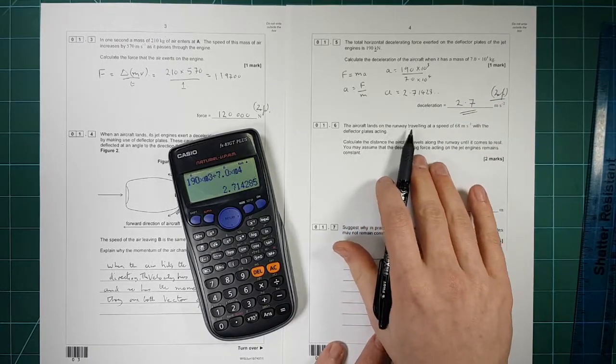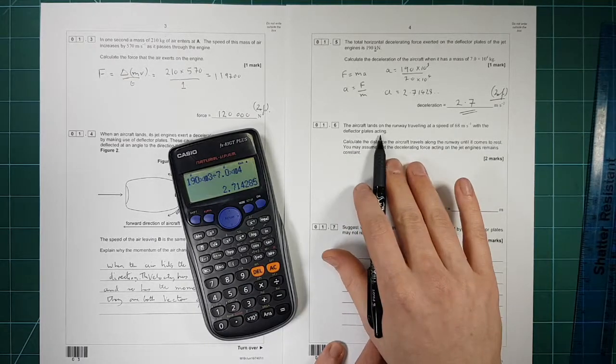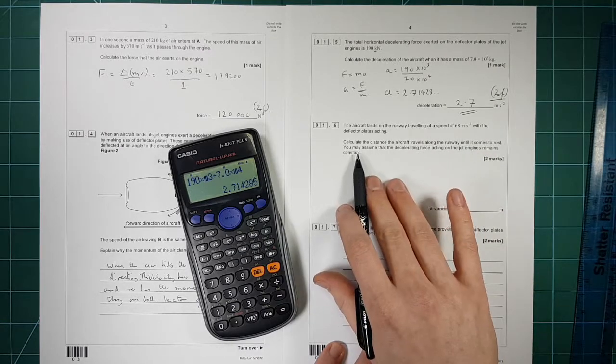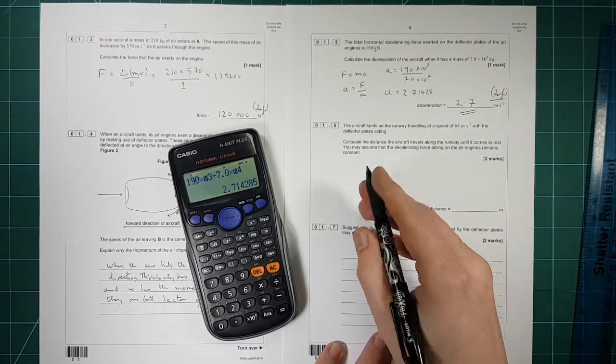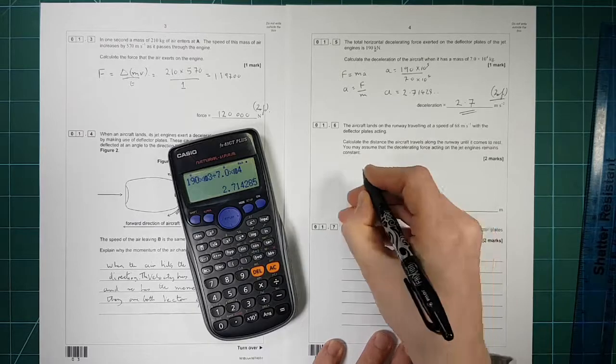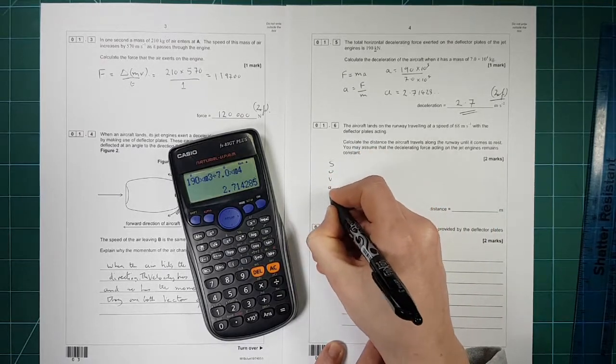The aircraft on the runway is travelling at a speed of 68 metres per second with deflector plates acting. Calculate the distance the aircraft travels along the runway when it comes to rest. You may assume that the decelerating force remains constant. So that means the deceleration will remain constant. This is a SUVAT question. So you go S, U, V, A, T.